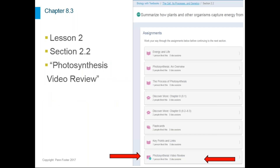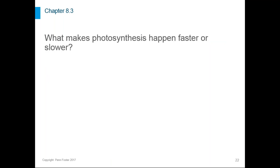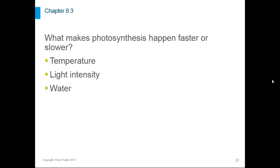Chapter 8 section 3 in the textbook details the process of photosynthesis in depth. Please watch the photosynthesis review video embedded in your course for that information. Section 3 also covers what affects the rate of photosynthesis. Three main factors: temperature — if it's too hot or too cold, photosynthesis slows down; light intensity — the brighter the light, the faster photosynthesis happens; and water — if there's not enough water available, photosynthesis will slow down.